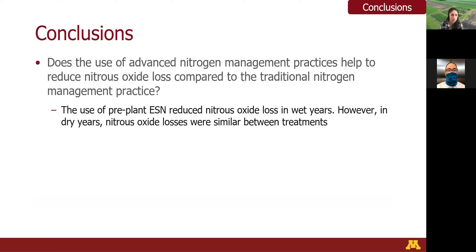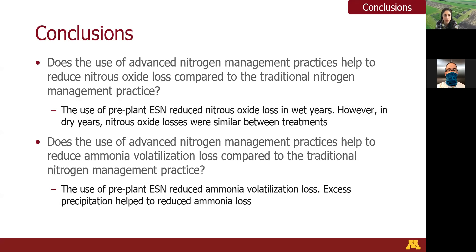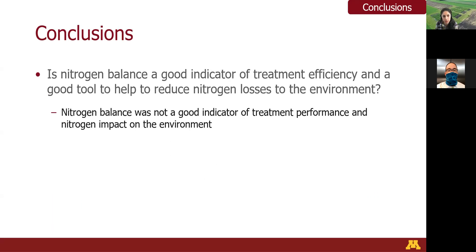For the conclusions of the second study: the use of pre-plant ESN helped to reduce nitrous oxide losses, especially in wet years after fertilizer application; however, in dry years, nitrous oxide losses were similar between treatments. We also found that the use of pre-plant ESN reduced ammonia volatilization losses compared to the other treatments, and excess precipitation actually helped to reduce ammonia loss by incorporating the nitrogen into the soil. We also concluded that nitrogen balance was not a good indicator of treatment performance or nitrogen impact on the environment.